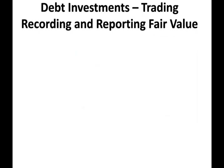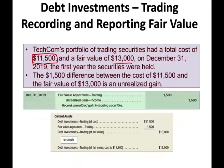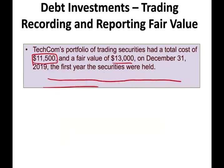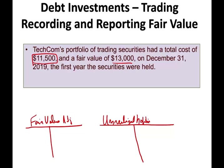The best way to illustrate this is with an example. Techcom's portfolio of trading securities has a total cost of $11,500 and a fair value of $13,000. They're worth $13,000 but we bought them for $11,500, so we have a gain — a difference of $1,500. To adjust the portfolio, we deal with two accounts: fair value adjustment and unrealized holding gain/loss.